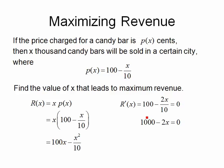So I'm going to multiply each piece by 10. So 10 times 100 is 1000. 10 times 2x/10 is simply 2x. So that leaves me with 1000 - 2x = 0. If I add 2x to both sides, I get 1000 = 2x. If I divide both sides by 2, that gives me x = 500.